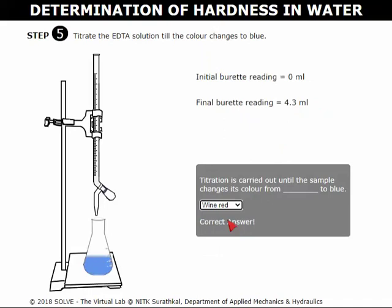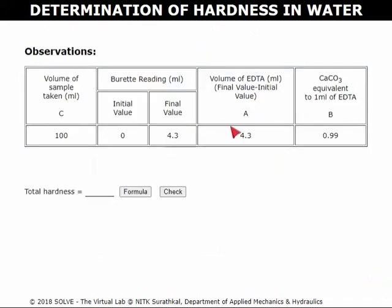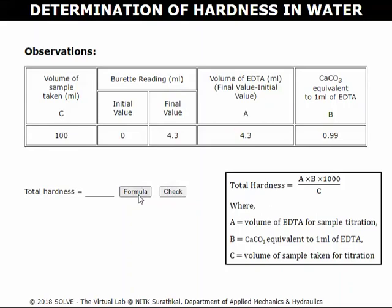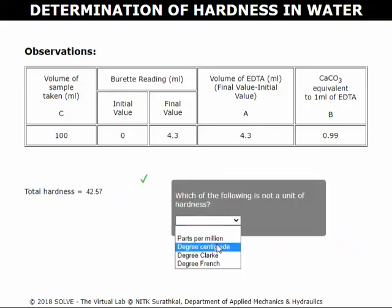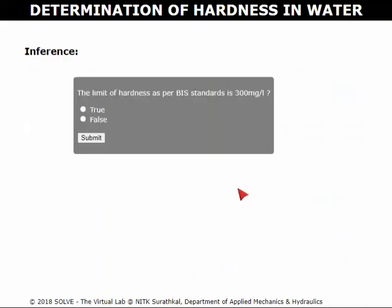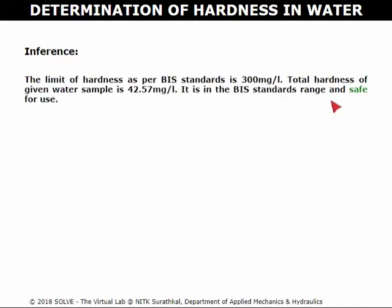These are the observations of the current trial. Click here to know the formula used to calculate total hardness. Click here to enter the calculated value. Click on check to check the actual value. Select the correct answer for this pop-up question to proceed to the next step. Select the correct answer to proceed to the inference. This is the inference drawn for this current experiment conducted.